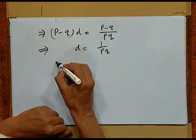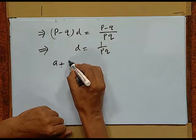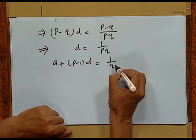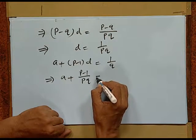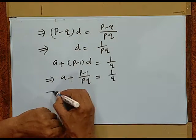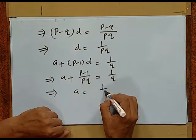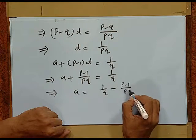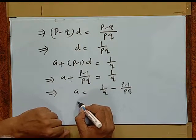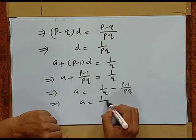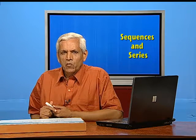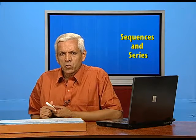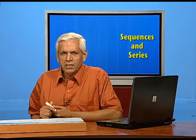To find a, taking the equation a + (p−1)/(pq) = 1/q gives a = 1/(pq). So a = 1/(pq). Now, when we find the arithmetic mean of two numbers, we are inserting one element between a and b so that a, that element, and b form an AP. This idea can be generalized.